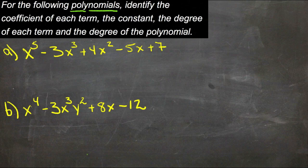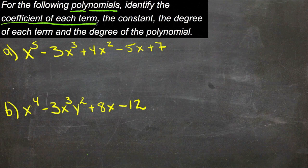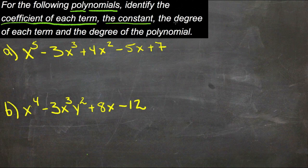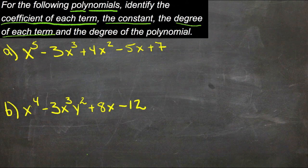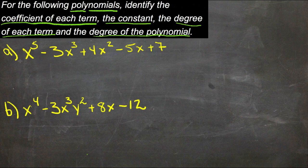Here we're going to identify the coefficient of each term in these polynomials, the constant term, the degree of each of the terms, and then the degree of the polynomial. So let's take a look at the first one and just take it step by step.